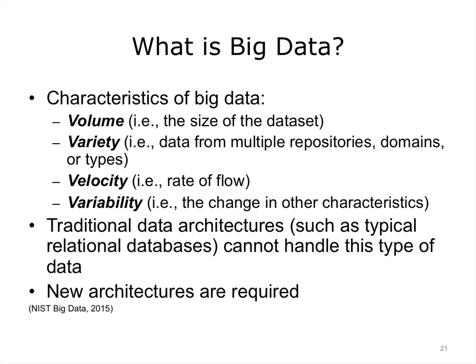So what exactly is big data? In September 2015, the National Institute of Standards, NIST, published a document defining many terms related to big data, analytics, and data science, stating that big data and data science are being used as buzzwords and are composites of many concepts. According to NIST, big data refers to the inability of traditional data architectures to efficiently handle new data sets. Characteristics of big data that force new architectures are volume (the size of the data set), variety (data from multiple repositories, domains, or types), velocity (the rate of flow), and variability (the change in other characteristics). These are known colloquially as the Vs of big data.